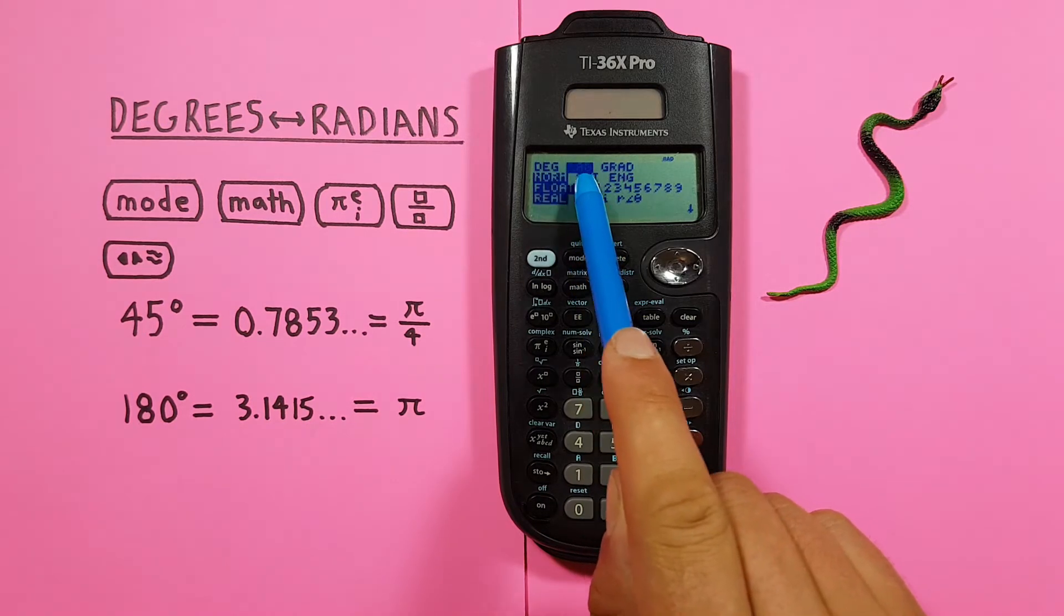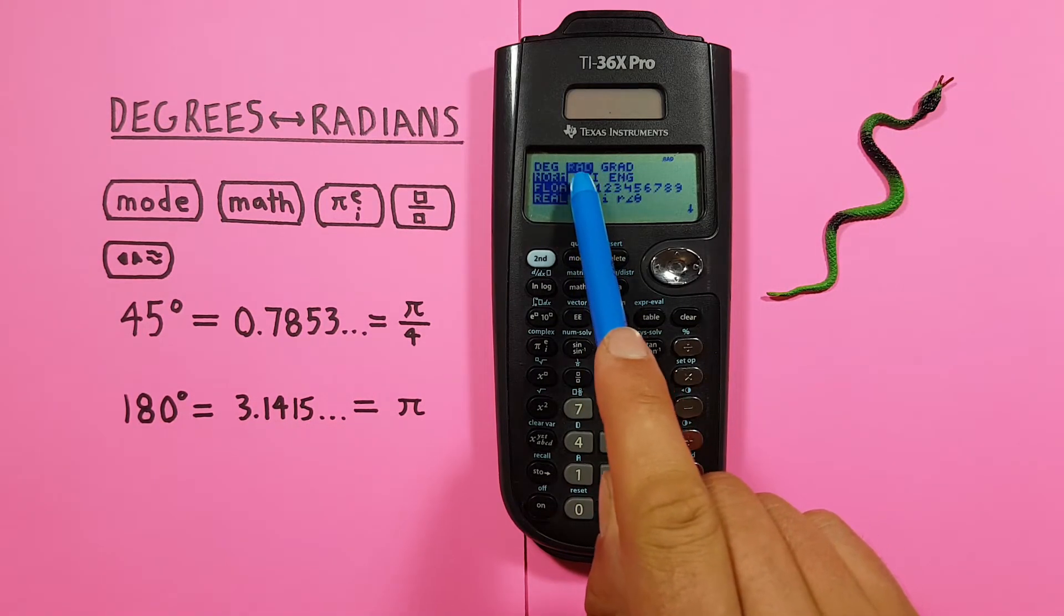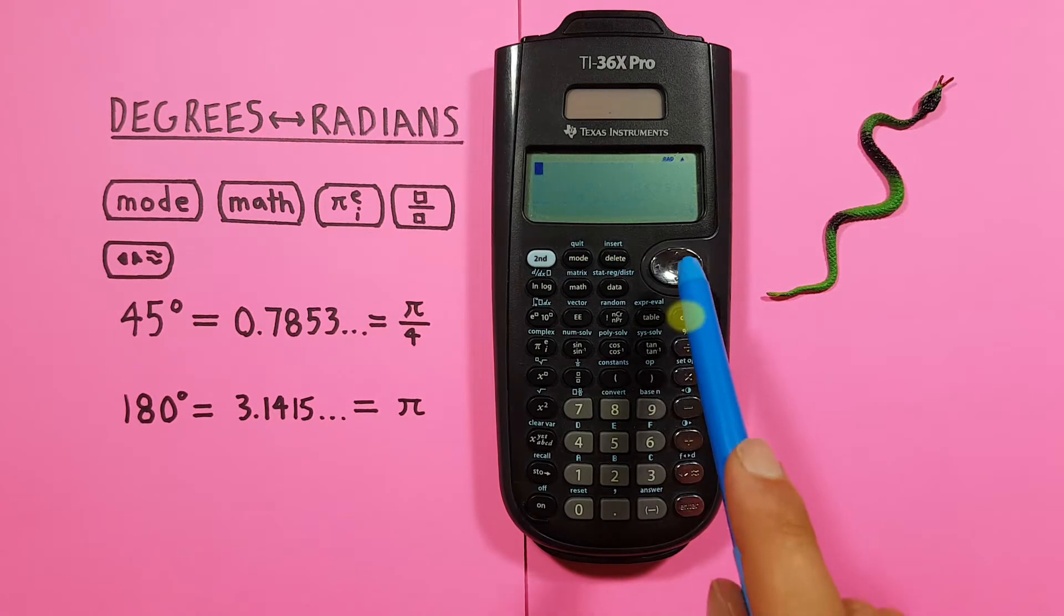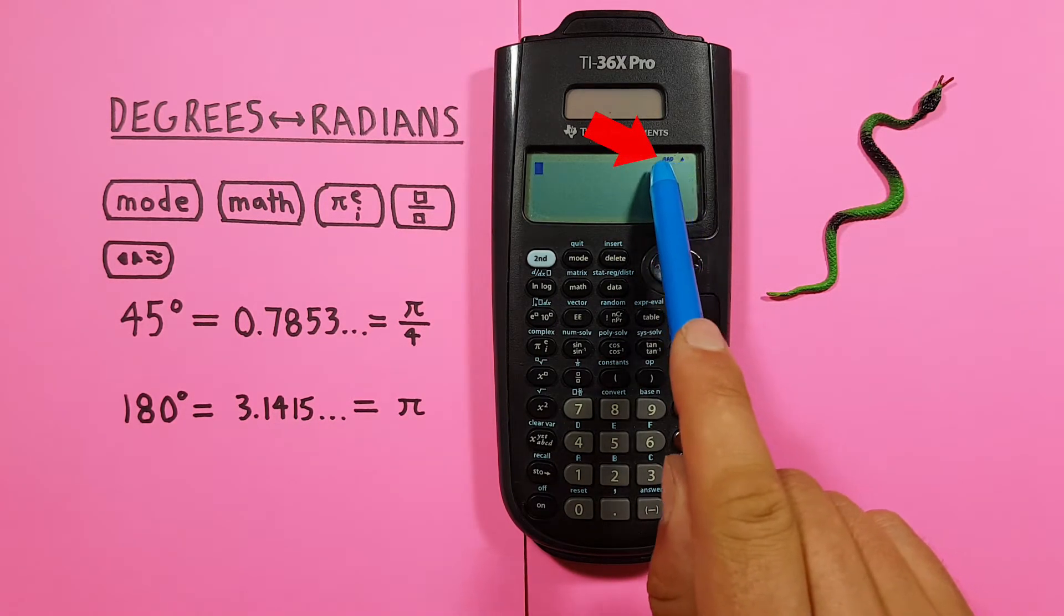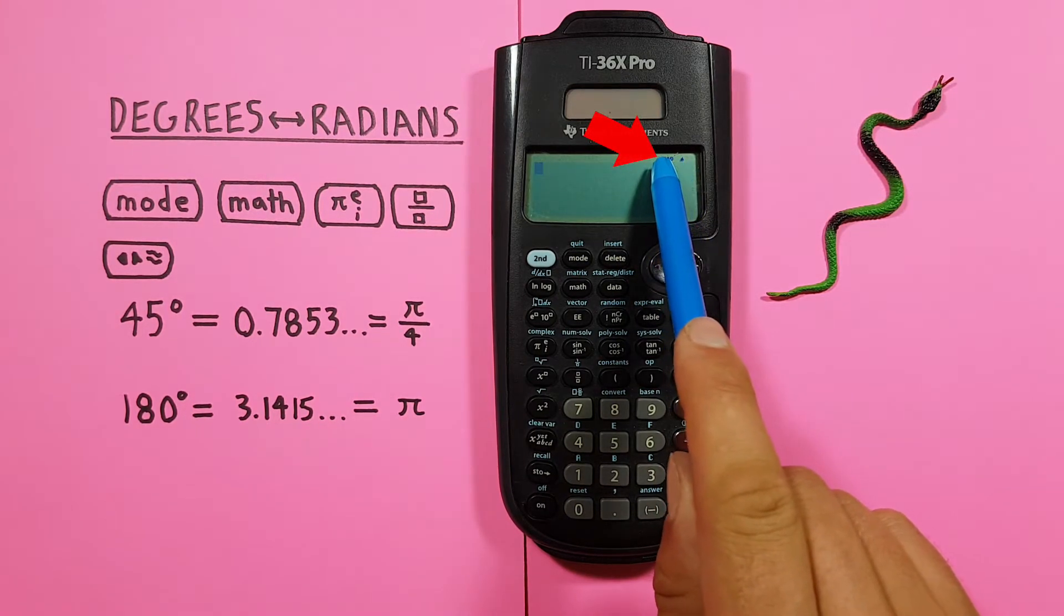Now we've highlighted rad or radians and we're in radian mode. We can clear out of this and we see rad at the top of our screen so we know we're in radians mode.